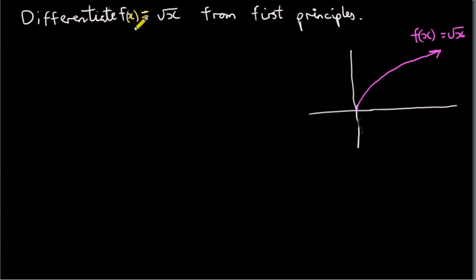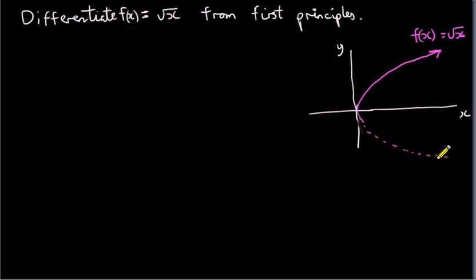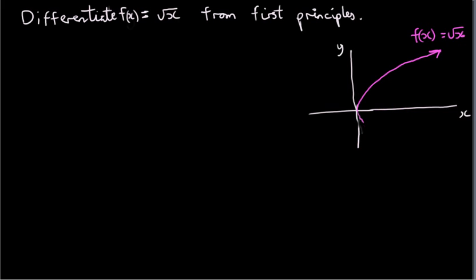I want to explain what it means to differentiate f of x equals root x from first principles. Here's a graph of the positive square root of x. Square root of x could be positive or negative, so really we have another part here, which is got by reflecting this part through the y-axis. So it's not really a function, because a function takes on just one value for each value of x, whereas our curve takes on two values, but we'll forget about that detail for now. So I'll just consider the positive square root.